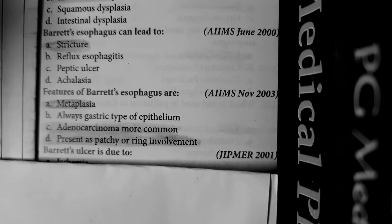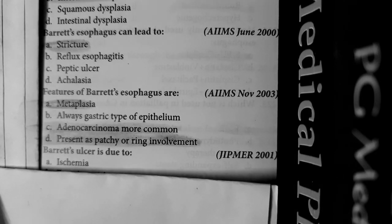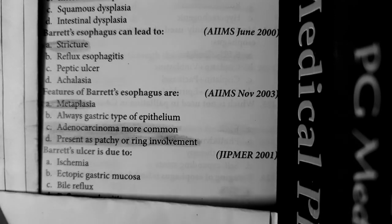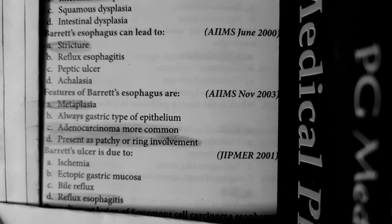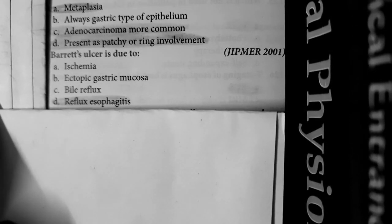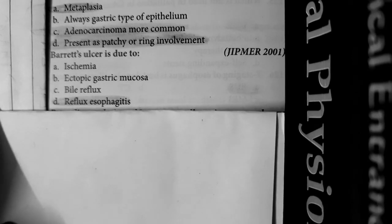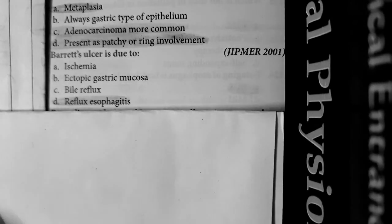Question number 5: Barrett's ulcer is due to reflux esophagitis. Ischemia — no. Ectopic gastric mucosa — no. Bile reflux — no. Whenever there is reflux esophagitis, that is, acid from the stomach reaches the lower end of esophagus either due to GERD or reflux esophagitis, the acid stimulates the squamous epithelium to undergo metaplasia, changing to columnar epithelium. Since squamous epithelium is not resistant to acid, it adapts itself so that the columnar epithelium, which is resistant to acid, forms. So Barrett's ulcer mainly occurs due to reflux esophagitis.